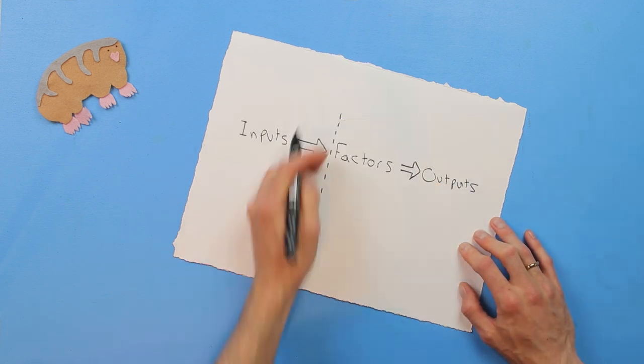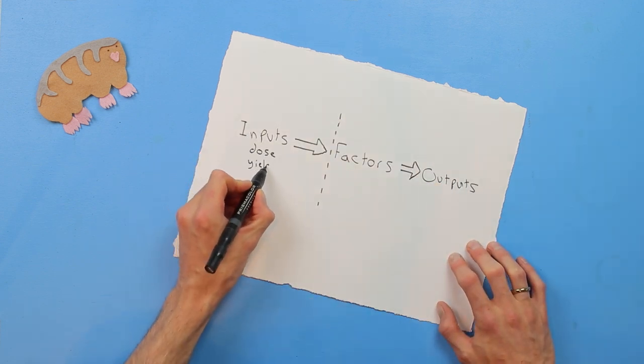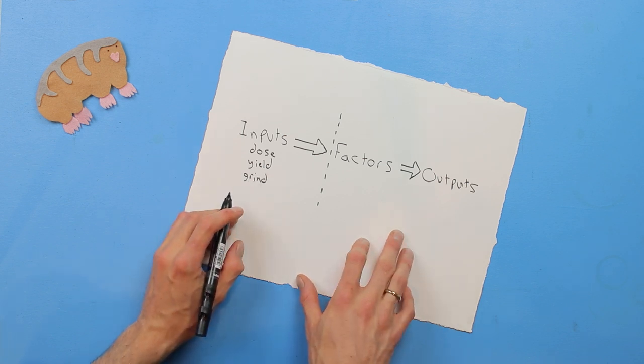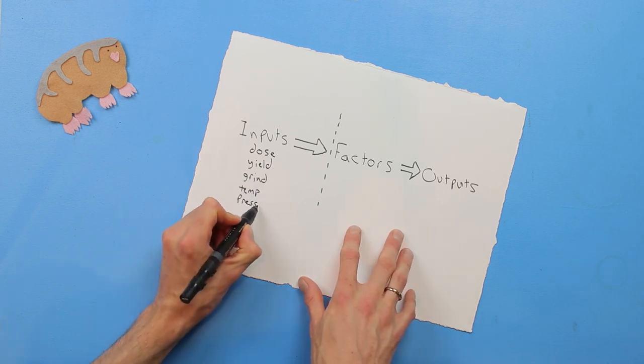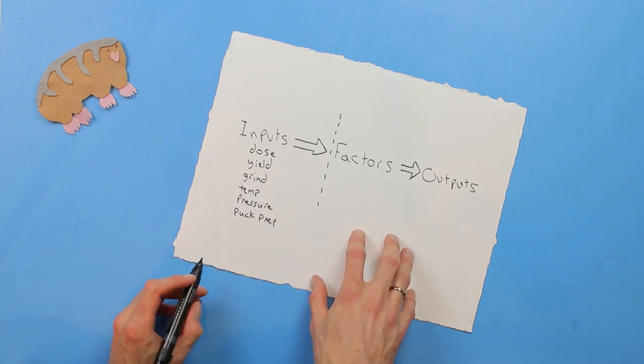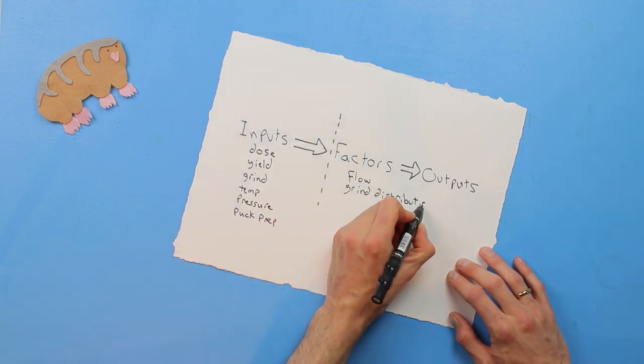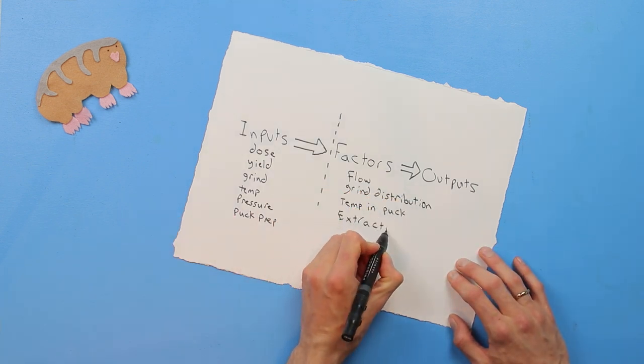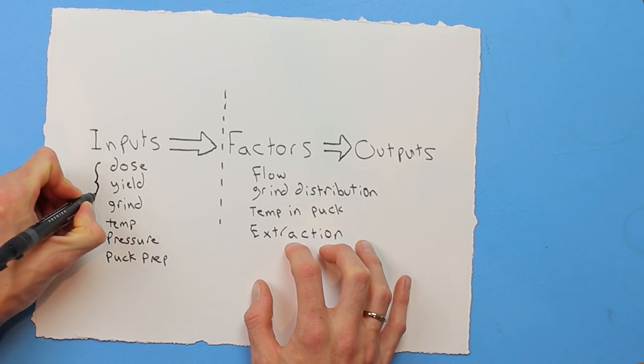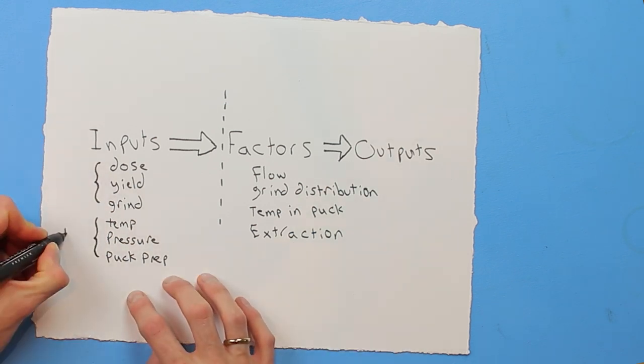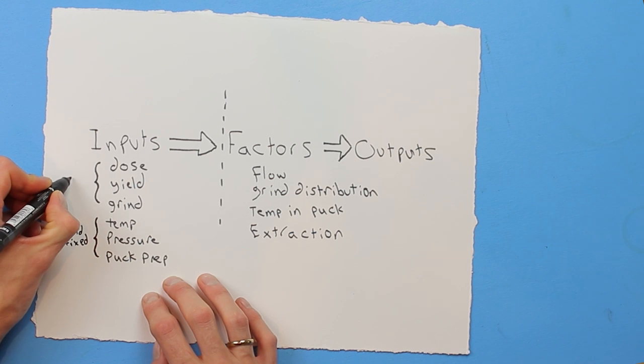Even with entry-level machines, you can influence many inputs, but what to change when brewing espresso isn't always obvious. My approach is to make limited changes after pulling each shot in an effort to intentionally move towards something I like.